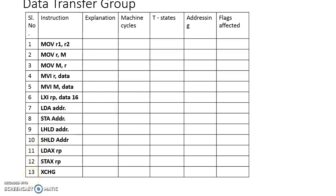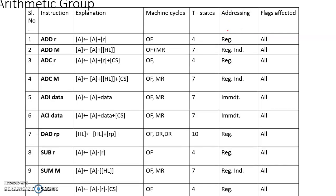We have already gone through the 13 different data transfer group instructions — the activities performed by each instruction, machine cycles involved, their relevant timing diagrams, number of T-states, addressing modes, and the flags affected. In fact, none of the data transfer instructions affect any of the status flags. Now we will move on to the arithmetic group of instructions.